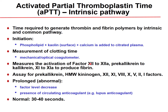The intrinsic pathway measured by APTT includes factors 12 (Hageman factor), prekallikrein, high molecular weight kininogen, 11, 8, 10, 5, 2, and 1. A prolonged APTT indicates decreased levels of these factors, or the presence of a circulating anticoagulant antibody, such as the lupus anticoagulant seen in SLE. Normal APTT value is 30 to 40 seconds.